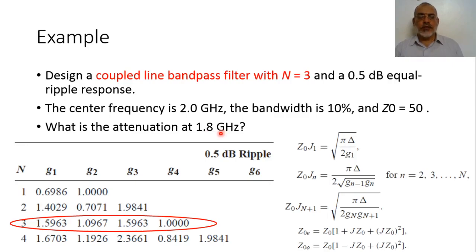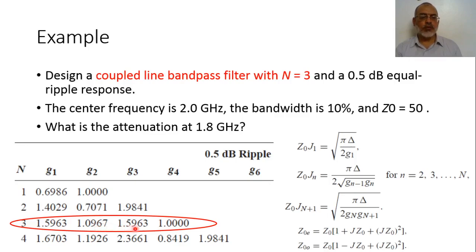According to the previous discussion, the first step is that we start with the low-pass filter prototype. For 0.5 dB ripple, the values of G for the prototype are given by this table. For N equals 3, we use these values: G1 is 1.5963, G2 is 1.0967, G3 is 1.5963, and G4 is 1.